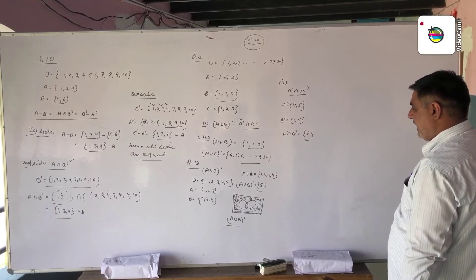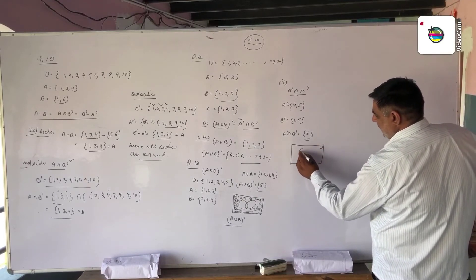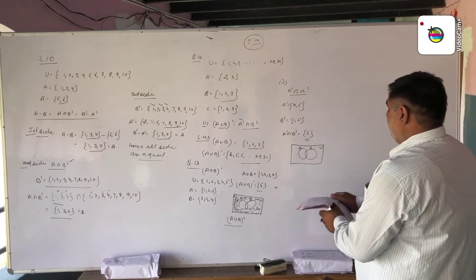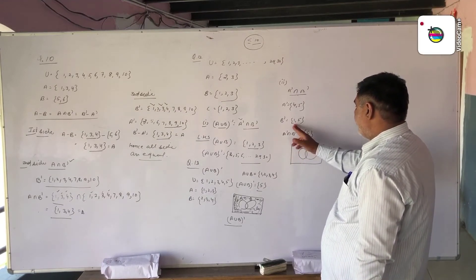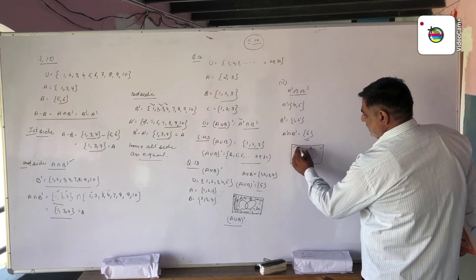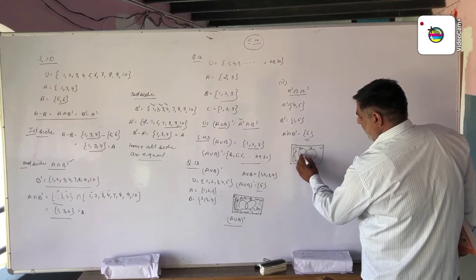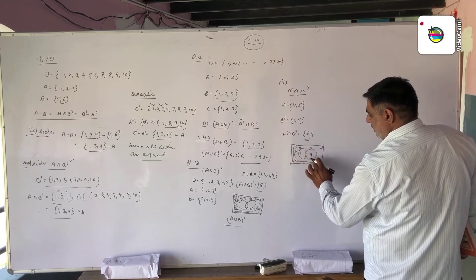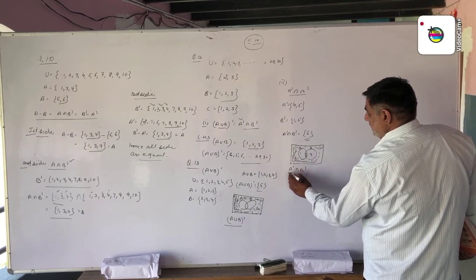This common element 5 represents the Venn diagram area. This is set U, this is set A, this is set B, this is the intersection region of both sets. A' is outside A, B' is outside B. A' intersection B' is the region outside both A and B — the remaining element. This is the Venn diagram of A' intersection B'.